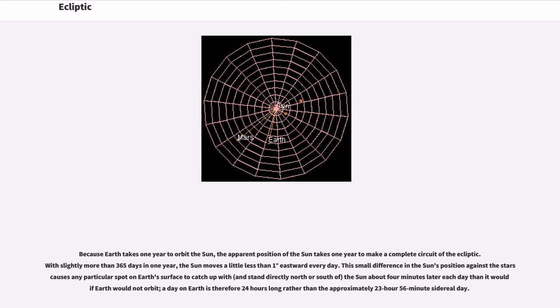Because Earth takes one year to orbit the Sun, the apparent position of the Sun takes one year to make a complete circuit of the ecliptic. With slightly more than 365 days in one year, the Sun moves a little less than one degree eastward every day. This small difference in the Sun's position against the stars causes any particular spot on Earth's surface to catch up with and stand directly north or south of the Sun about four minutes later each day than it would if Earth did not orbit.